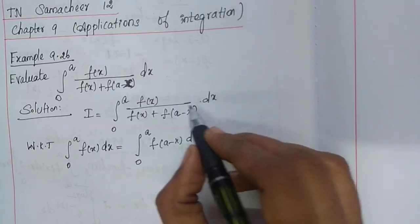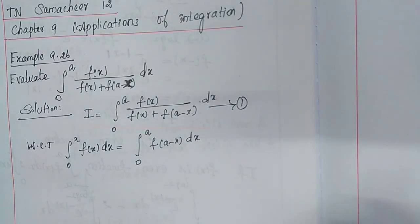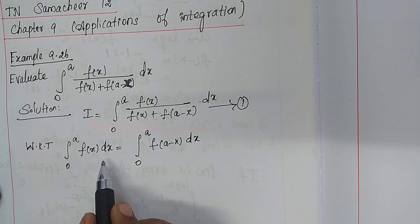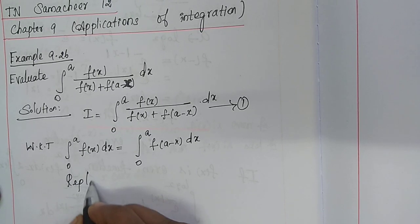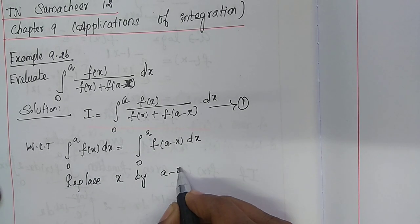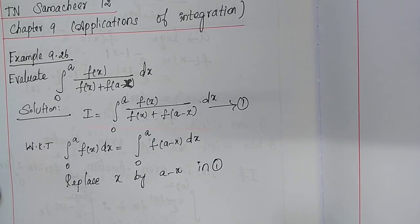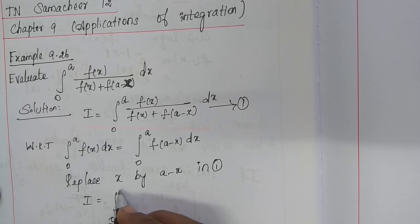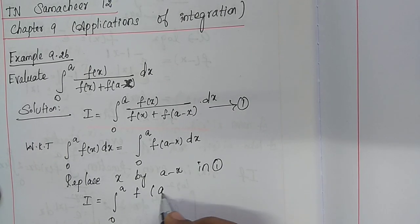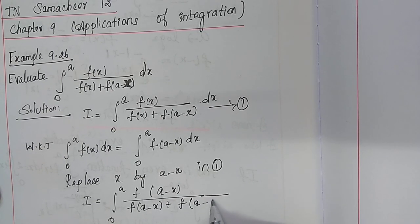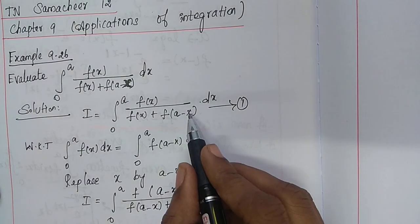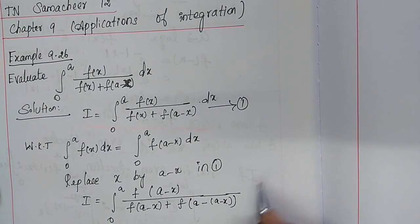The given integral i is taken as equation number one. According to this property, replace x by (a minus x) in equation number one. Therefore we get i is equal to the integral from 0 to a of f(a minus x) divided by f(a minus x) plus f(a minus (a minus x)), with dx.